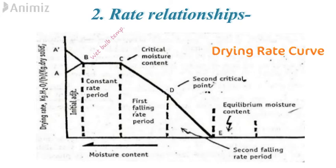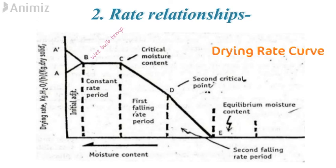The third phase, from C to D, is the first falling rate period. Surface water is no longer replaced fast enough to maintain a continuous film, dry spots begin to appear, and the drying rate falls. Point D is the second critical point, where the film of surface water is completely evaporated. The phase from D to E is the second falling rate period, where the drying rate falls even more rapidly and is dependent on the rate of diffusion of moisture to the surface. Point E represents the equilibrium moisture content. Beyond E, the drying rate is zero, temperature and moisture content remain constant, and continued drying is a waste of time and energy.